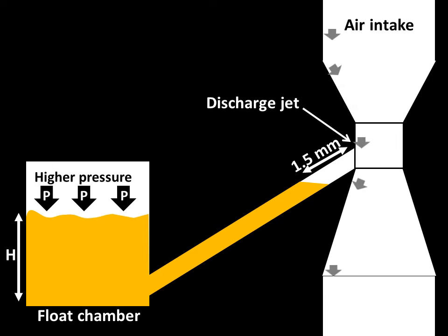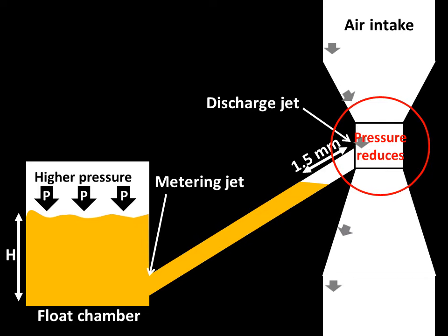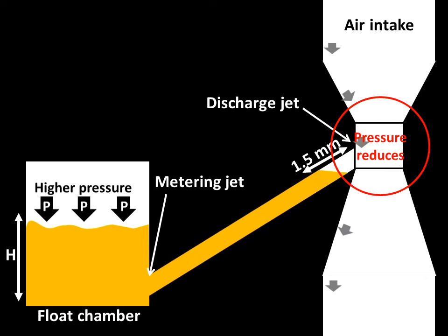As we know, according to Bernoulli's theorem, where the velocity of air is higher, the pressure is lower. Therefore, because of pressure difference between metering jet in the float chamber and the discharge jet, the fuel rises at the discharge jet and sprays on high velocity air.